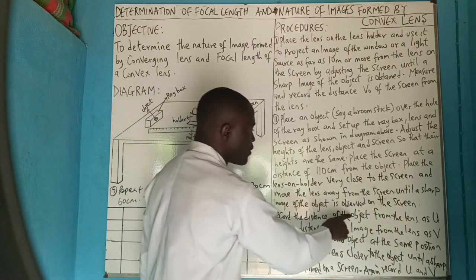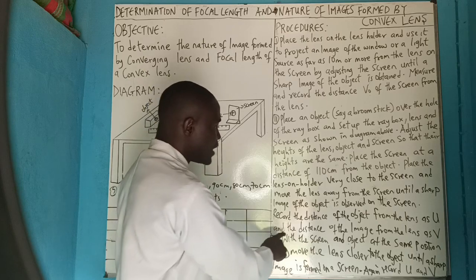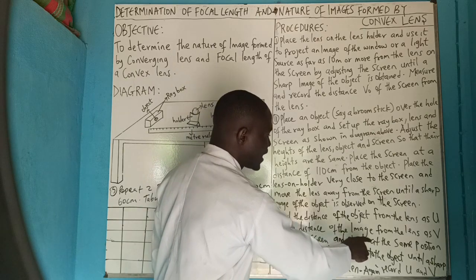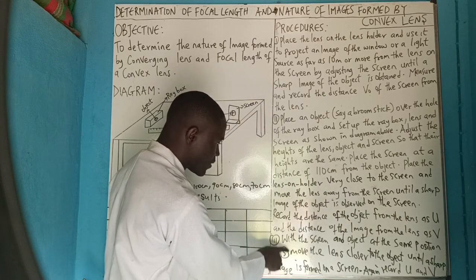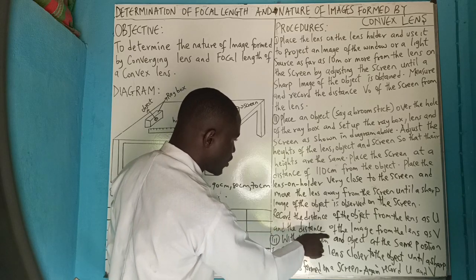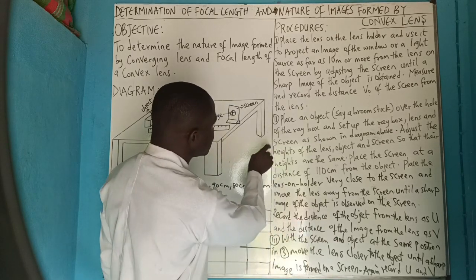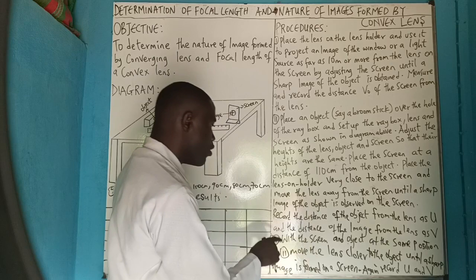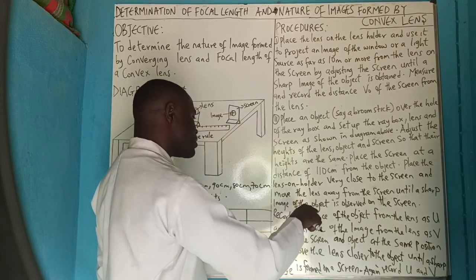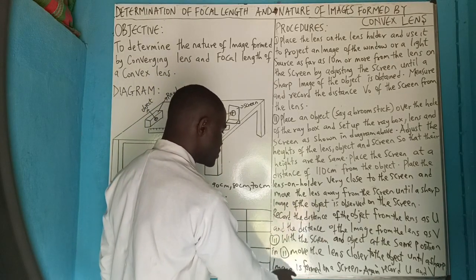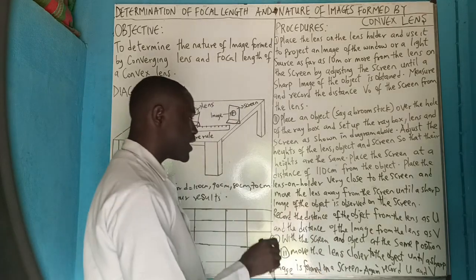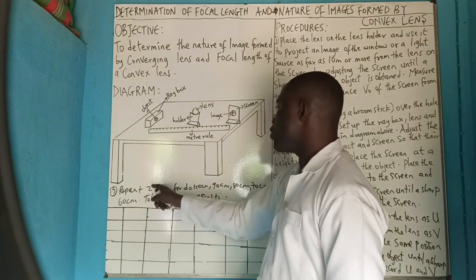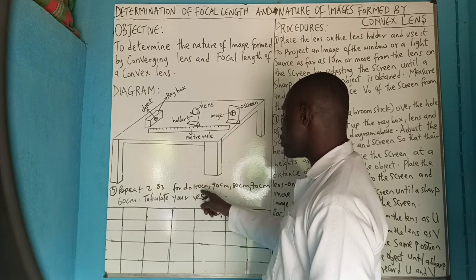Record the distance of the object from the lens as u and the distance of the image from the lens as v. With the screen and object at the same position, move the lens closer to the object until a sharp image is formed on the screen again, then record u and v. Repeat steps 2 and 3 for d equals 100 cm.